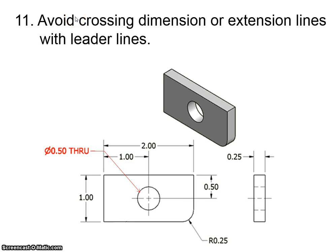Okay, rule 11, avoid crossing dimension or extension lines with leader lines. It's the same deal here. You see this part here's dimension, but you'll see that this leader line is crossing these dimension and extension lines. So it's incorrect to put it here. This leader line would be best put down on the bottom left here. So you'll see that's where it should be. It should be away from other dimensions.